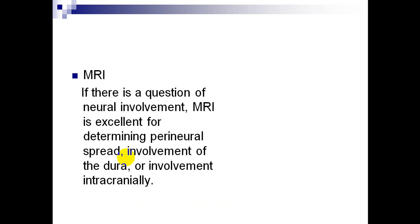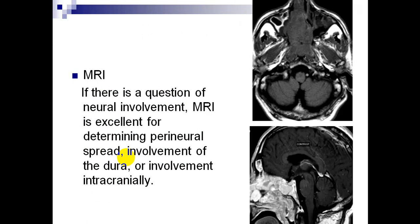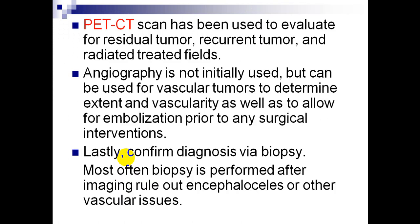MRI with contrast study is indicated when there is suspicion of intracranial extension, dural invasion, and perineural extension, as in adenoid cystic carcinoma. These MRI with contrast images show intracranial extension and dural invasion. PET-CT scan has been used to evaluate for residual tumor, recurrent tumor, and radiation-treated fields.